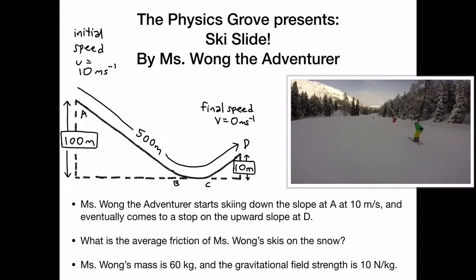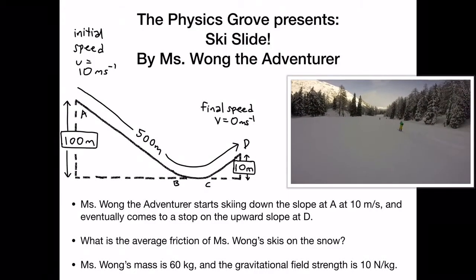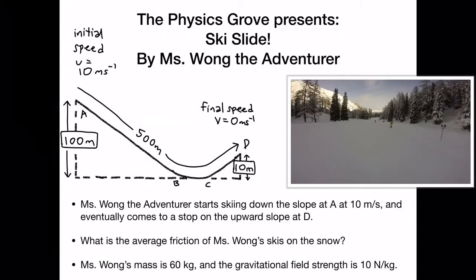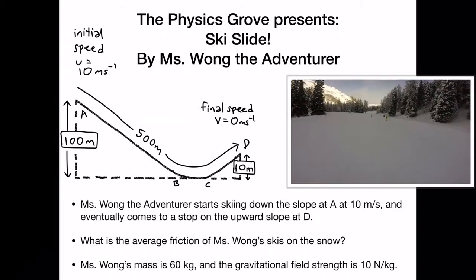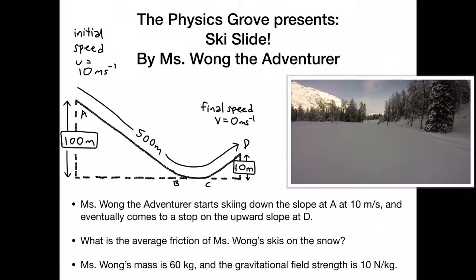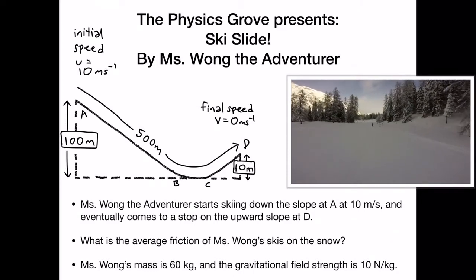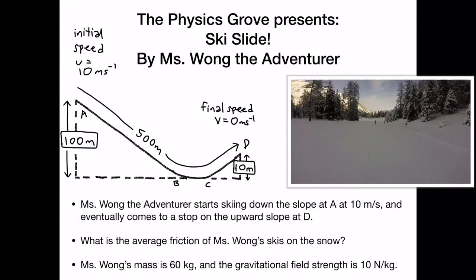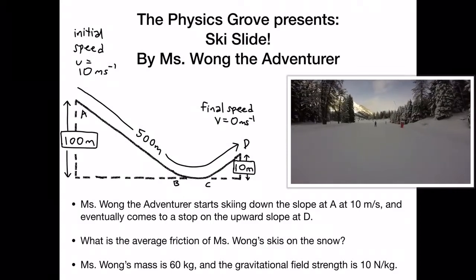Hi everyone and welcome to the Physics Grove presents Ski Slide by Miss Wong the Adventurer. So Miss Wong the Adventurer starts skiing down the slope at 10 meters per second. She skis down all the way 500 meters and then she eventually comes to a stop on the upward slope at D.